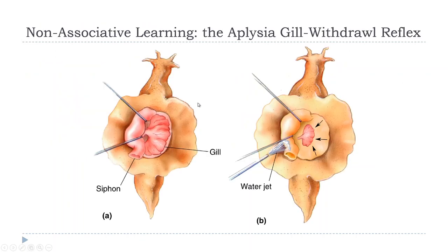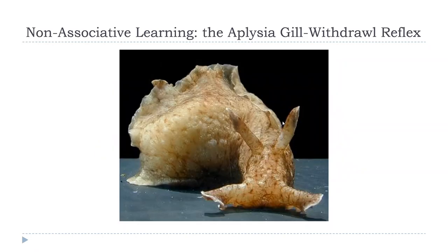The probably best-studied animal in terms of memory is a creature called Aplysia — a type of sea slug, sometimes called sea hares. They're really common and were mostly used because they were easy to collect and raise in captivity. They've historically been used to study not just learning and memory but other circuits as well. They have a relatively simple body and nervous system, with parts that are easy to access.